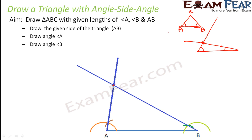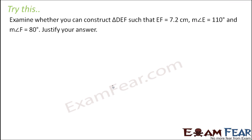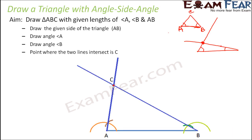In this case, this point becomes point C. So the point where the two lines intersect is point C. And this is how you get your triangle A, B, C.